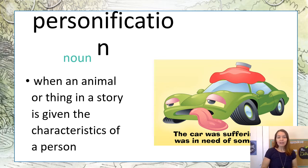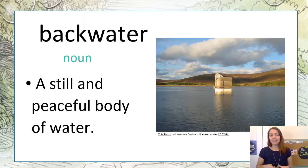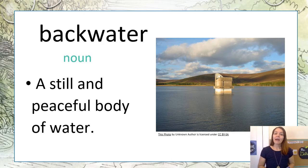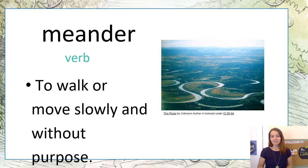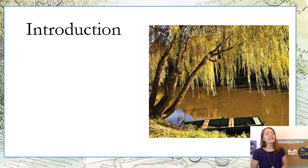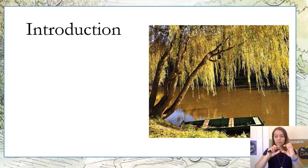Type personification in the second yellow box. Our next word is backwater — a still and peaceful body of water. Type backwater in the third yellow box. Our next word is meander, which means to walk or move slowly and without purpose. Type meander in the fourth box. You're going to pause on this page — do not keep scrolling until I ask you to. That reminder is also in your Google Doc; there is a red stop sign that says pausing point.